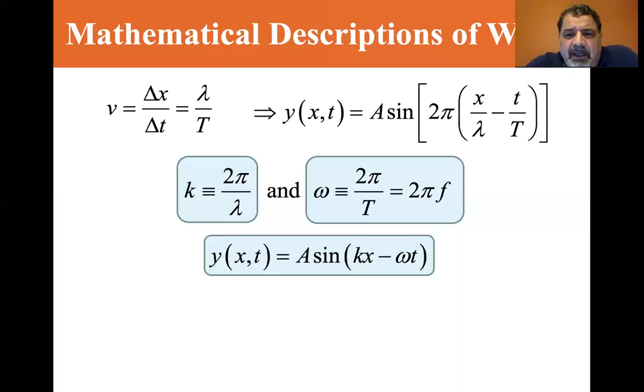Okay. So Y of X comma T is equal to A sine KX minus Omega T. V is equal to Omega divided by K and the velocity is equal to Lambda times frequency. Now you can get these by remembering the old distance equals rate times time. And distance equals rate times one over time is equal to the frequency. So distance equals rate divided by the frequency. Those are ways I remember this.